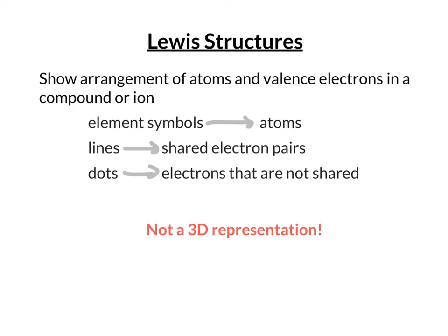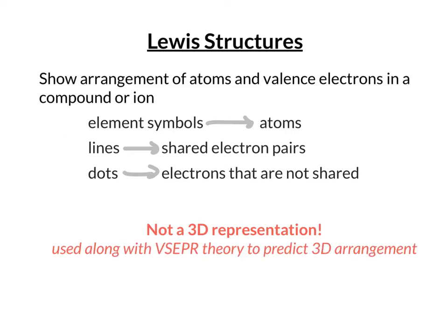In a Lewis structure, we're just showing the connectivity and where the electrons are, not the angles or exact orientation. But we can use a Lewis structure along with the valence-shell electron pair repulsion theory, or VSEPR theory, to help us predict the actual 3D arrangement of that molecule or ion, including the bond angles and polarity.